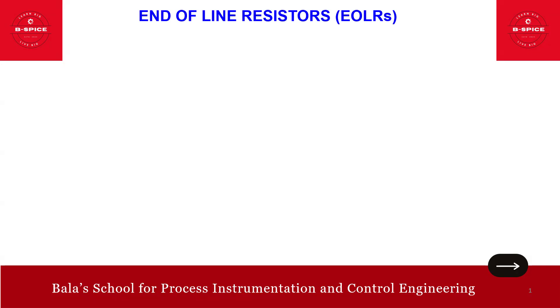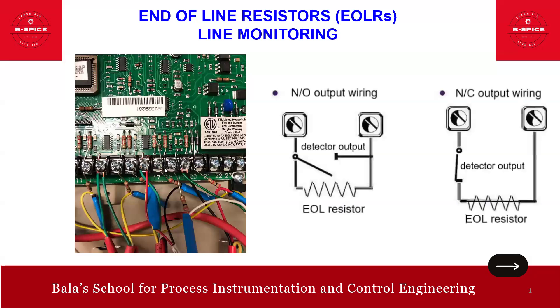Welcome back to bspice. In this session we'll discuss end-of-line resistors and line monitoring — how they work and why they are used in fire and gas systems and high integrity control circuits. This is the look and feel of the end-of-line resistor. As you can see, this is a typical NO (normally open) output wiring and this is for NC (normally closed) output wiring. This comes under back to basics.